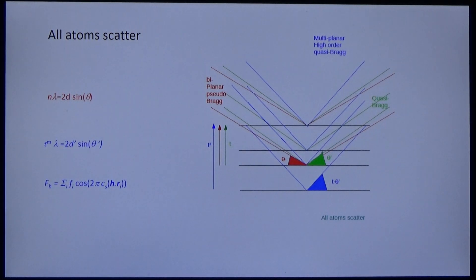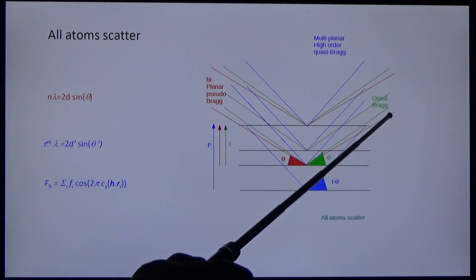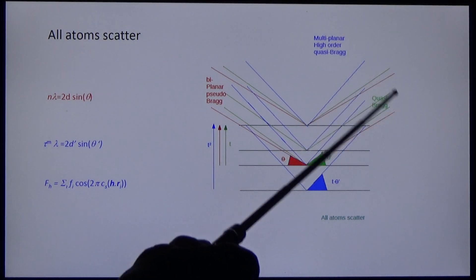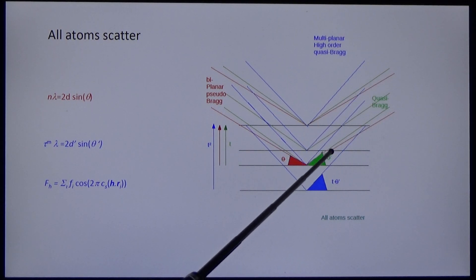Let's consider diffraction. Bragg diffraction is bi-planar. Look at the red lines. The difference of path length between the two red lines is equal to the wavelength. That's physics 101.